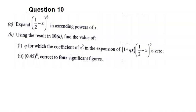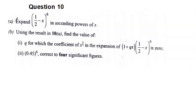Welcome to Remedial One YouTube channel. In this video I'm looking at WASSCE 2022 Further Mathematics question number 10. Part (a): expand (1/2 - x)^6 in ascending powers of x. Part (b): using the result in 10a, find the value of k for which the coefficient of x squared in the expansion is zero, then find the value of 0.45 to the power six correct to four significant figures.